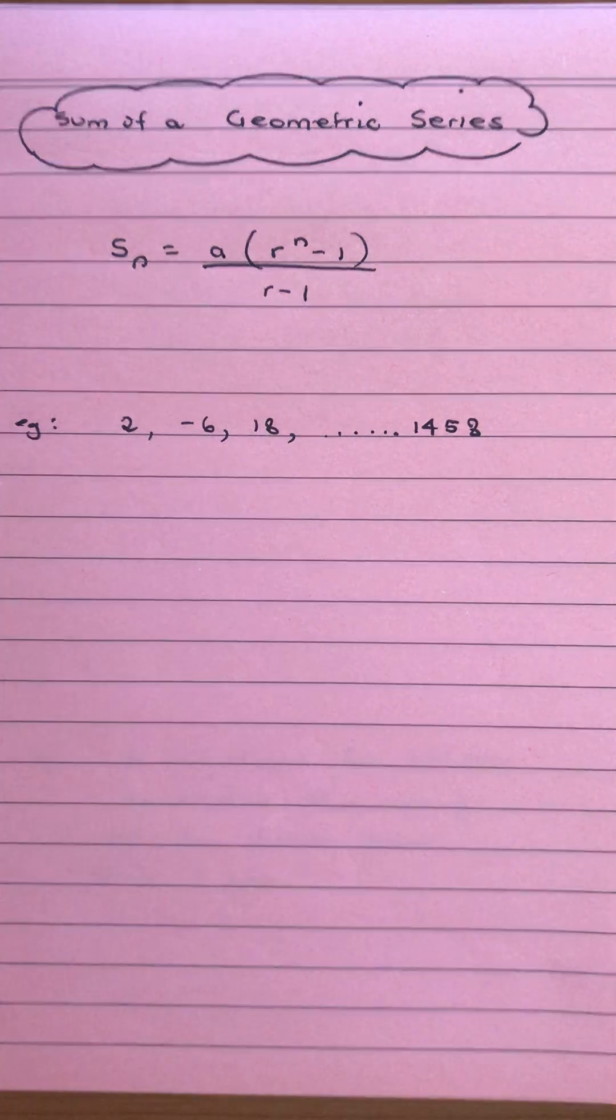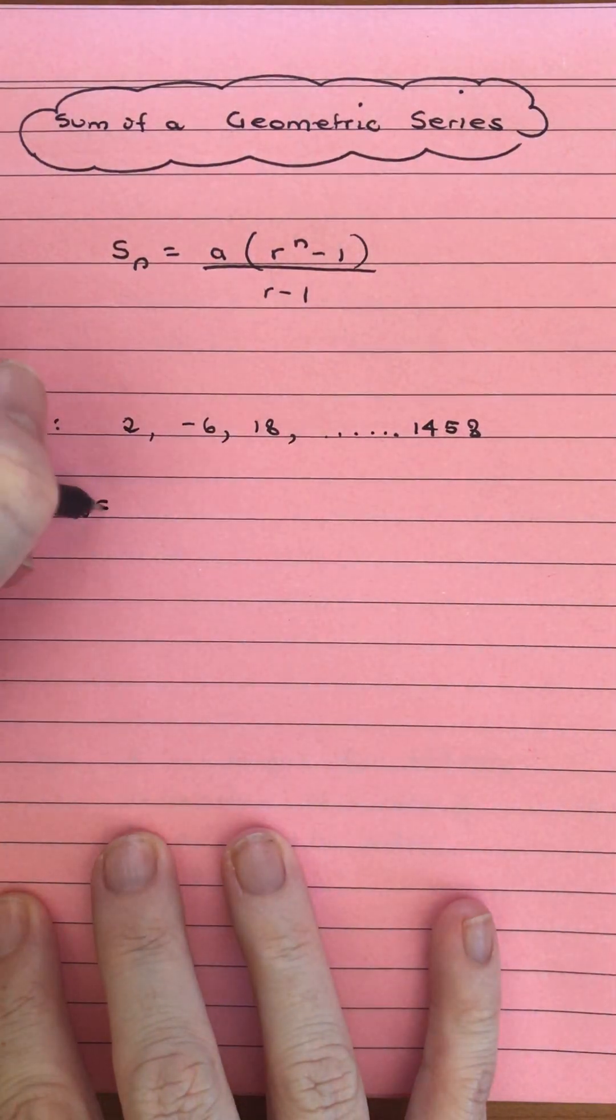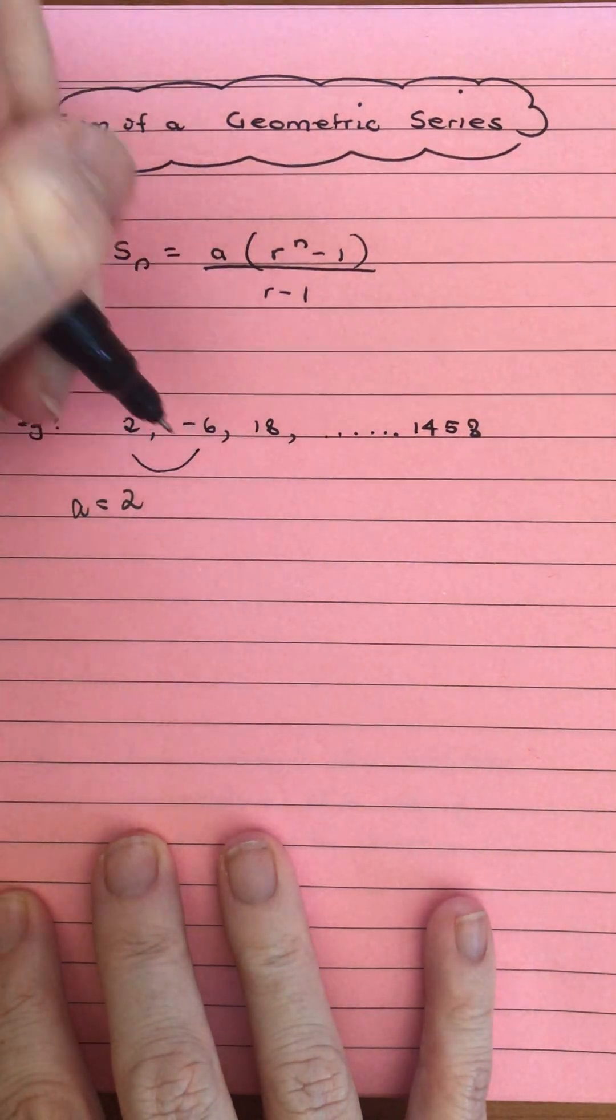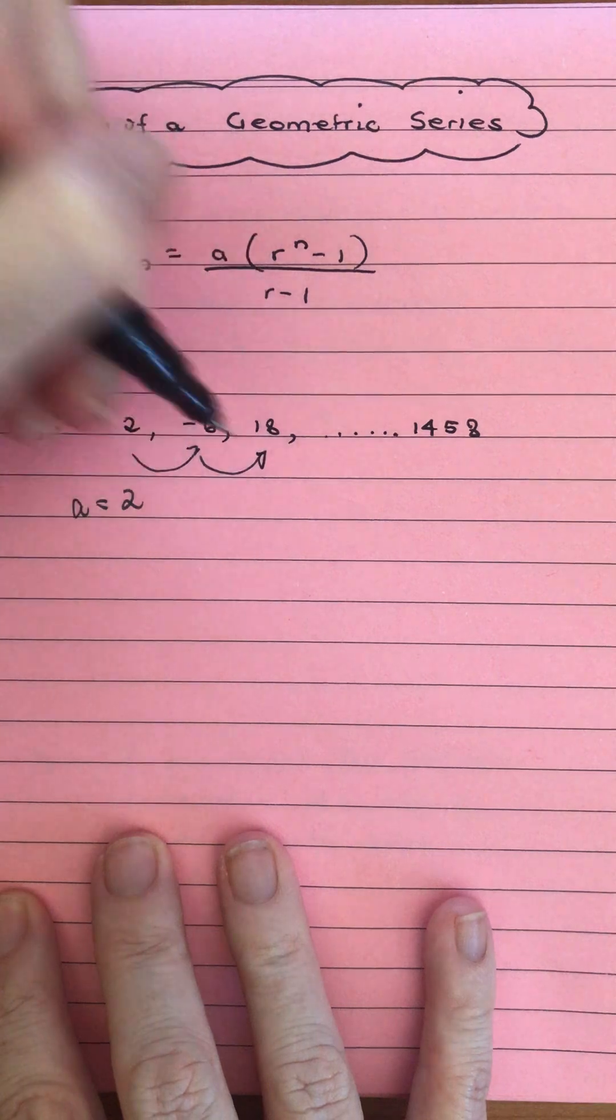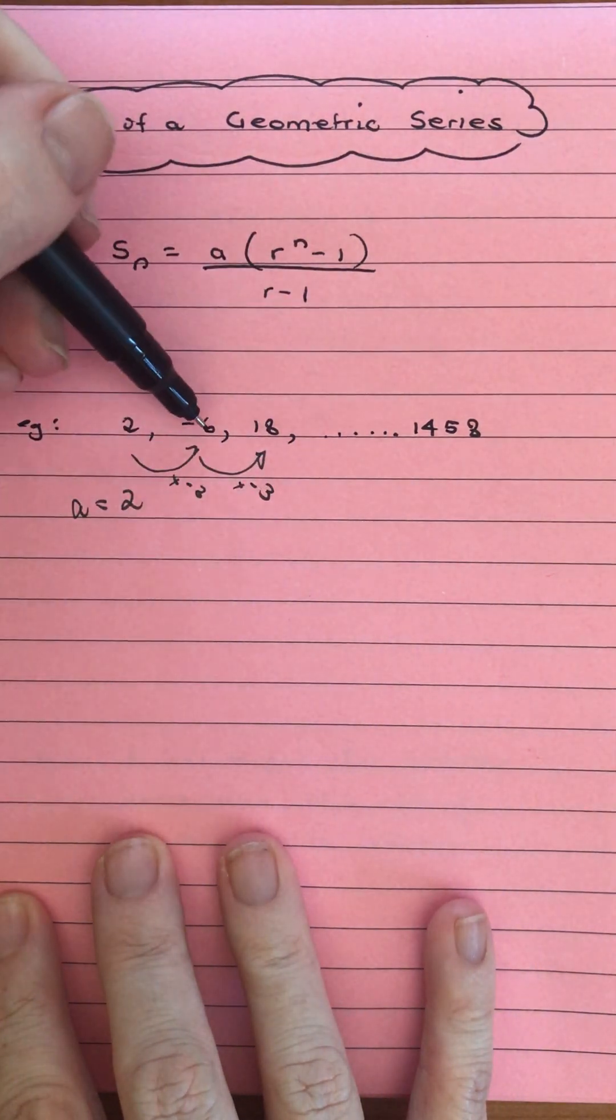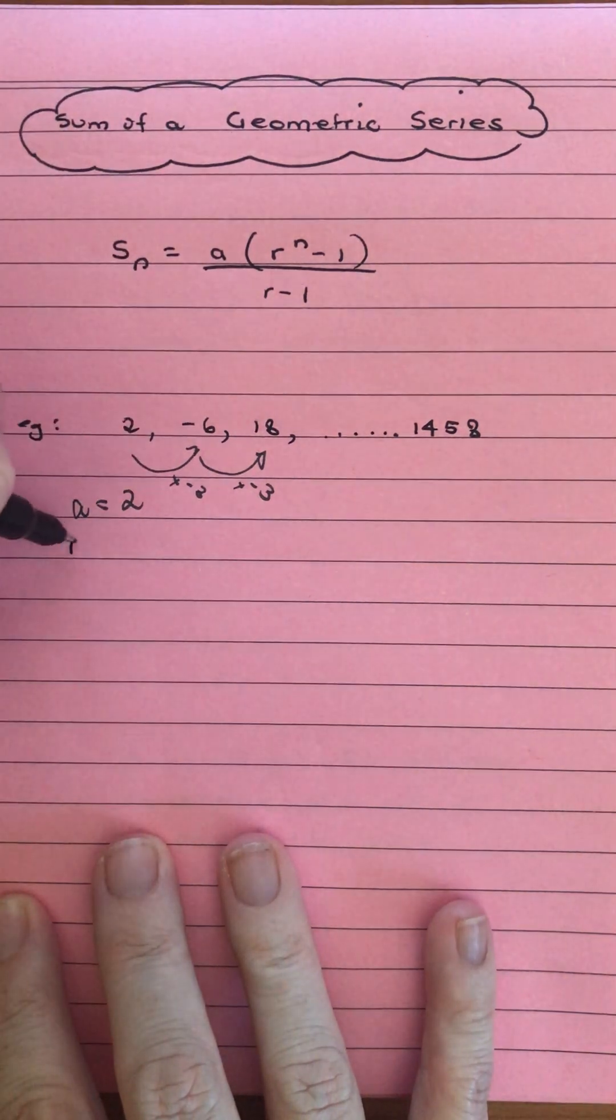We've got our series here. We obviously need an a value, so in this case our a is 2. We need an r value. What are we multiplying by each time? We're multiplying by negative 3. If we weren't sure, you would do -6 divided by 2, 18 divided by -6, and that would tell you your r value.